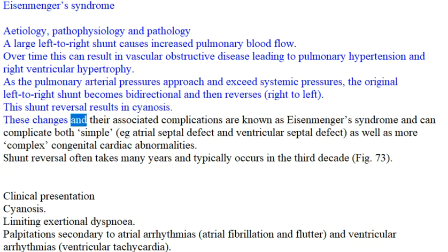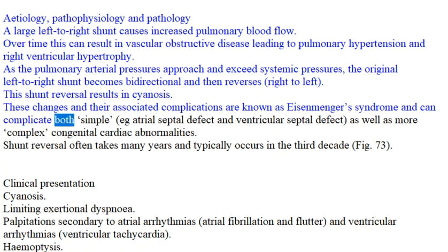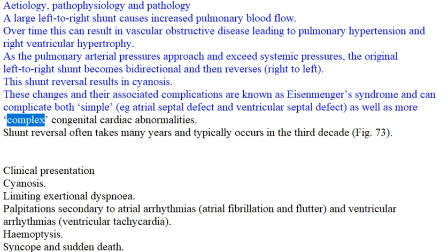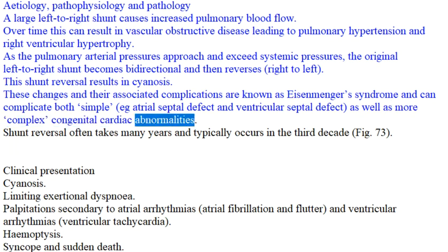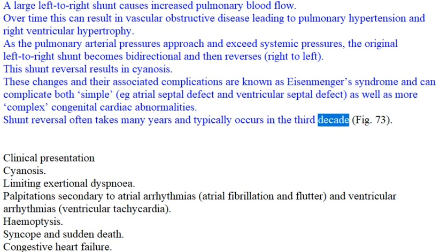These changes and their associated complications are known as Eisenmenger's Syndrome, and can complicate both simple conditions, e.g. atrial septal defect and ventricular septal defect, as well as more complex congenital cardiac abnormalities. Shunt reversal often takes many years and typically occurs in the third decade.